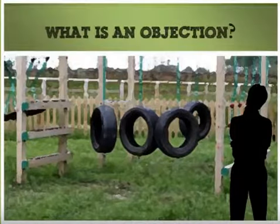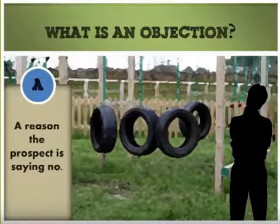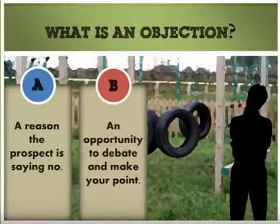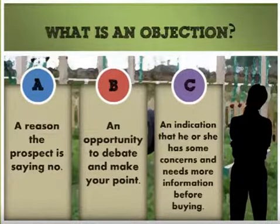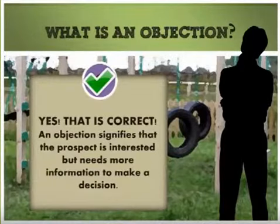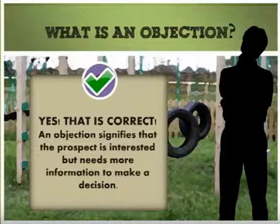What is an objection? A reason the prospect is saying no? An opportunity to debate and make your point? An indication that he or she has some concerns and needs more information before buying? Yes, that is correct. An objection signifies that the prospect is interested but needs more information to make a decision.